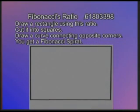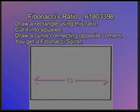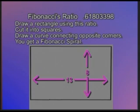If you look at the rectangle at the bottom of the screen, you'll notice that the length and the width of it have a certain ratio. For instance, if you made the length 13 feet and the width or height 8 feet, you would have Fibonacci numbers. And this would be called a Fibonacci rectangle.